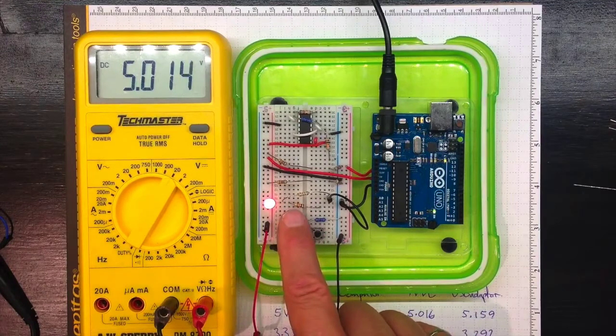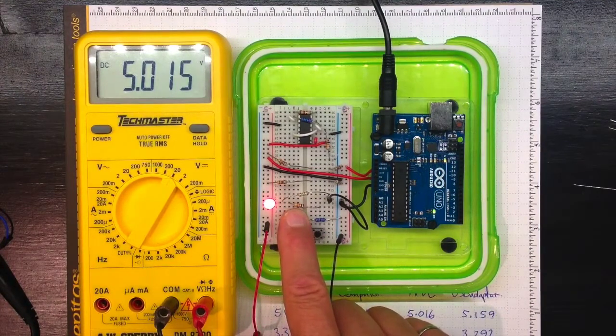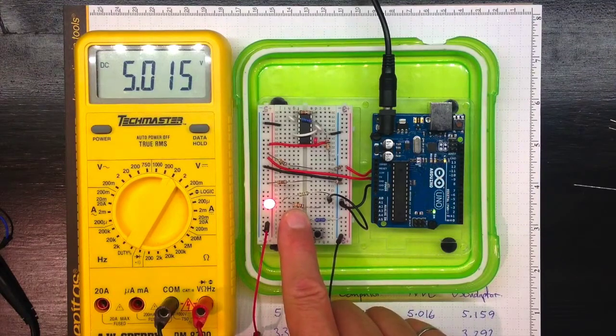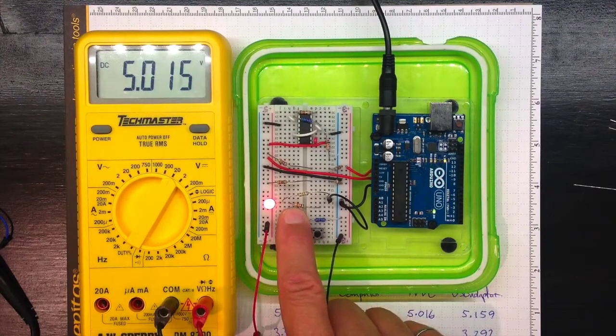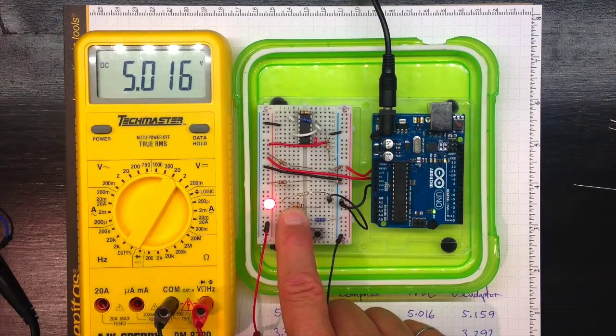Now this other resistor here is currently not connected to anything so it's not having any influence on the circuit. But it's brown, black, and orange. Brown being one, black being zero, and orange being three more zeros. So that's a 10,000 ohm resistor.